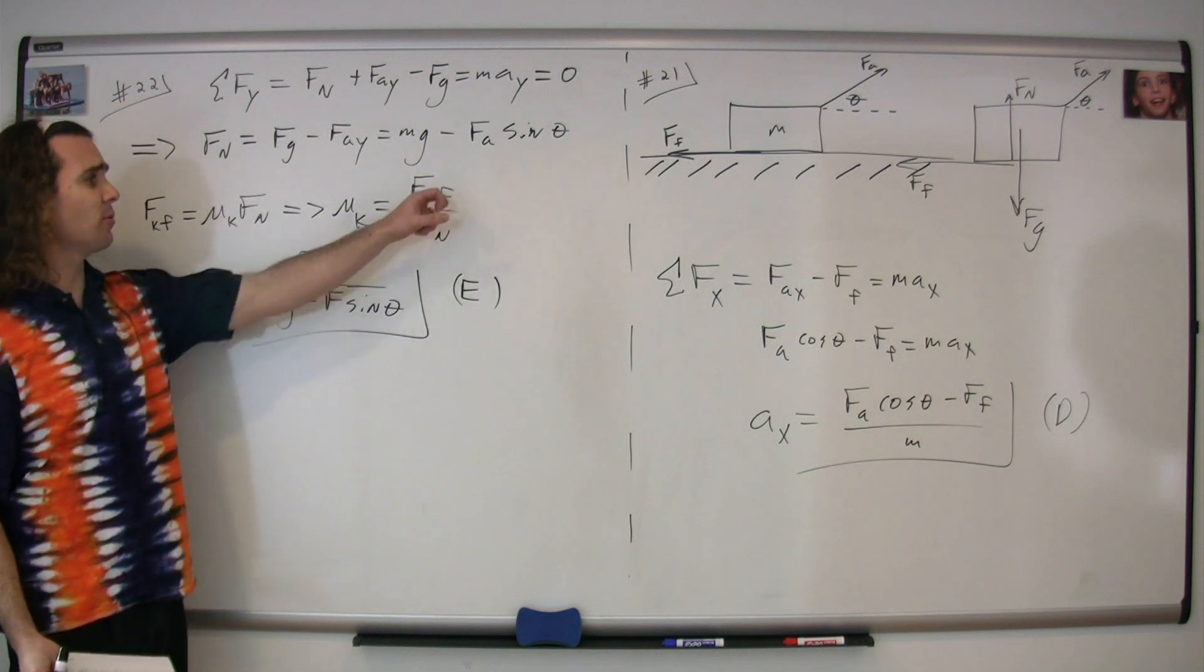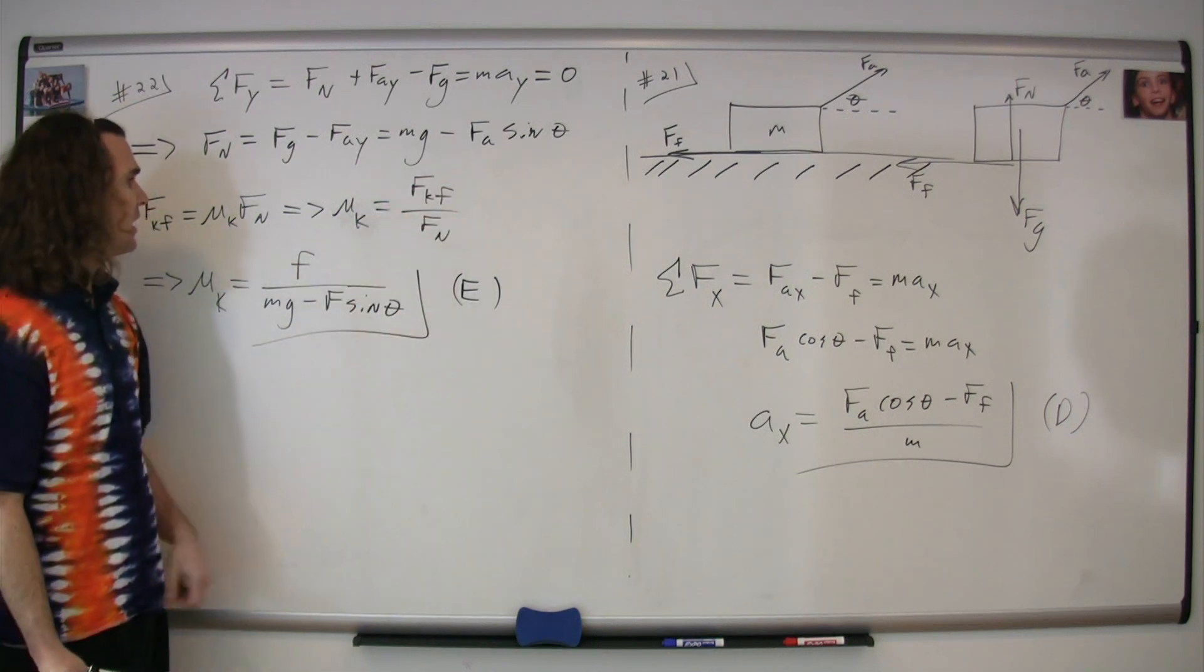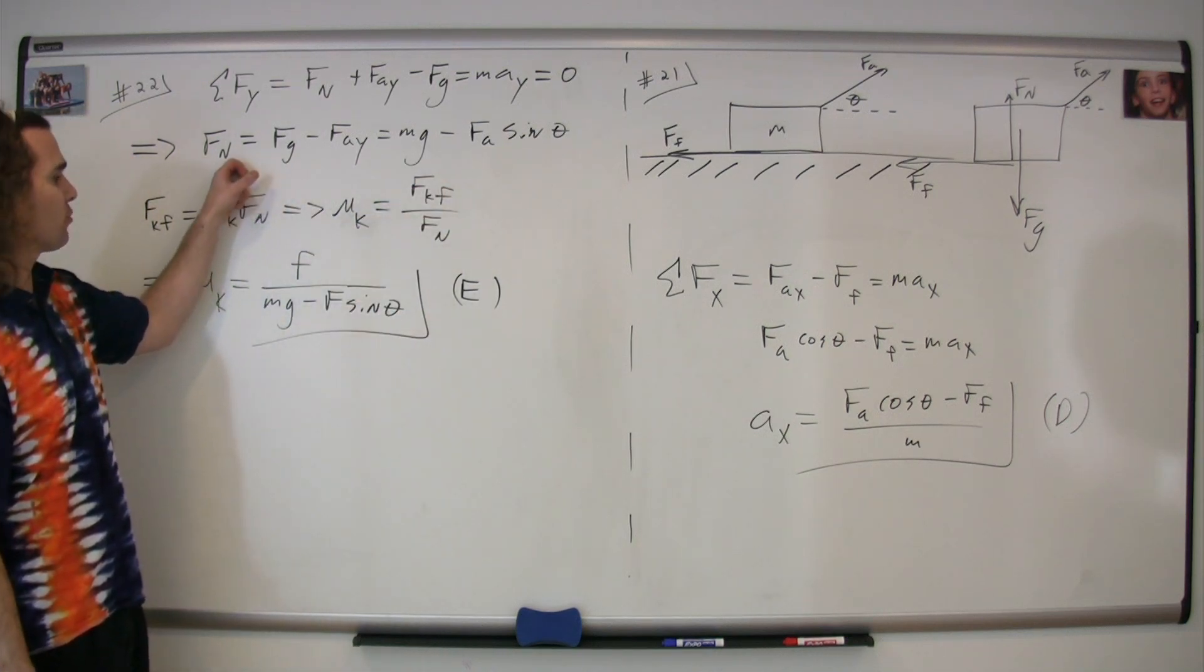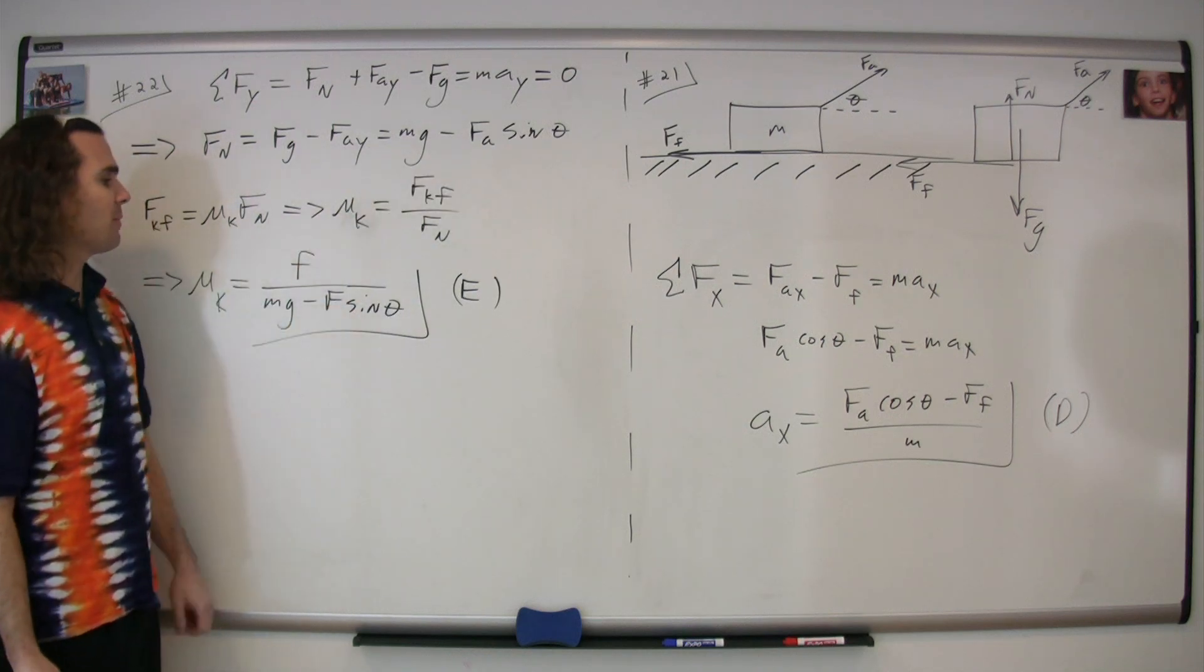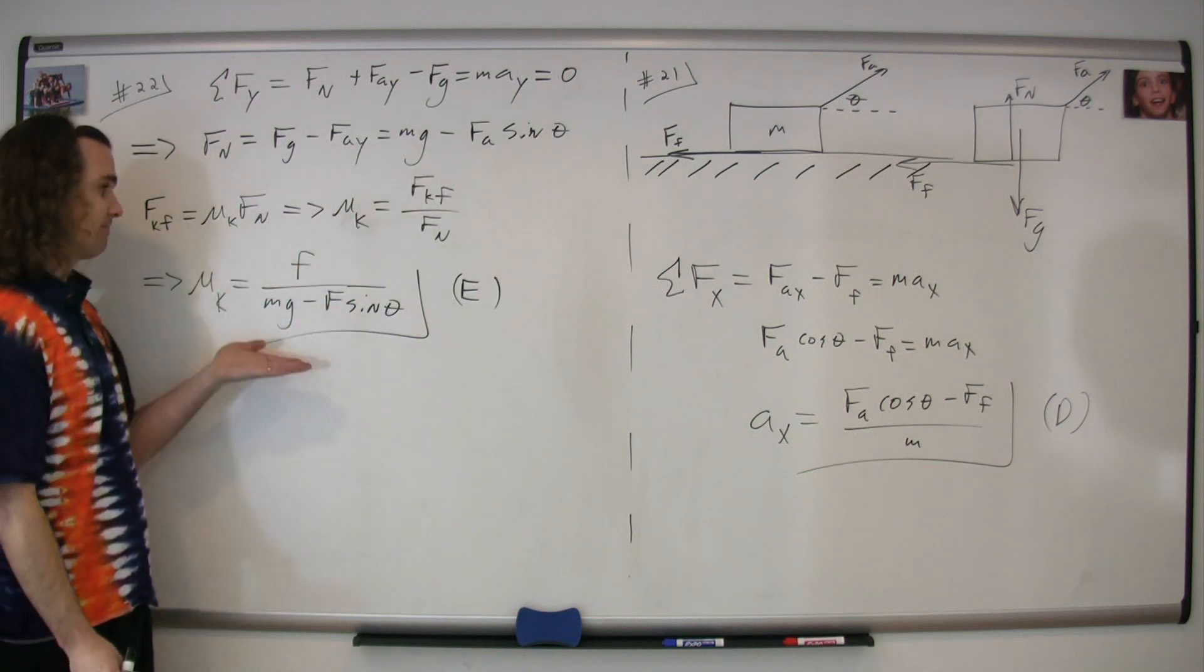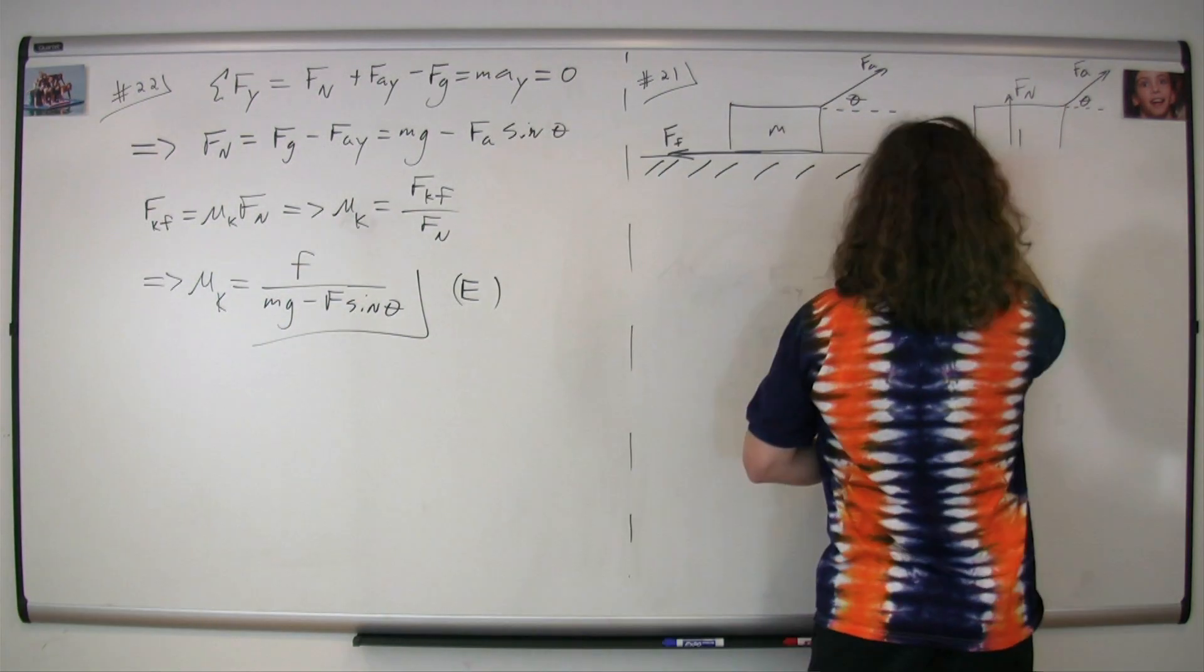Substituting in F, which is the symbol we're using for the force of kinetic friction, and substituting in what we figured out for the force normal, mass times the acceleration due to gravity minus the force applied multiplied by the sine of theta. The correct answer is E.